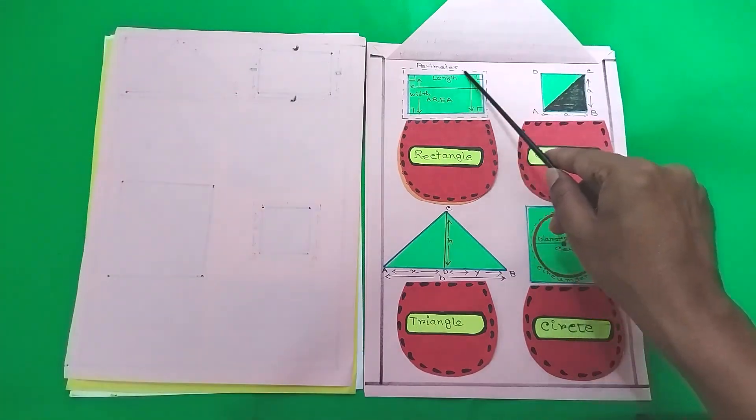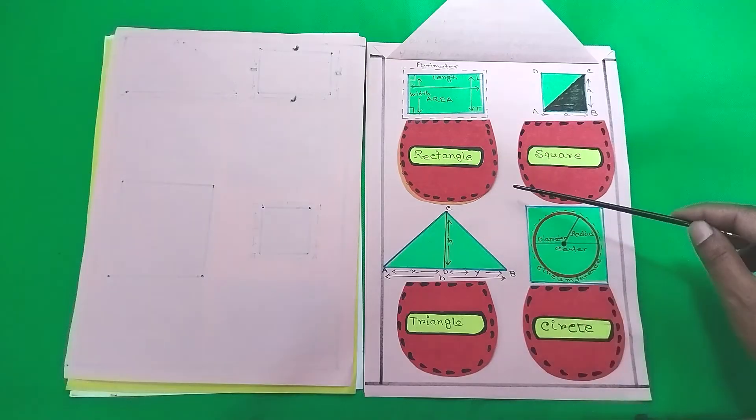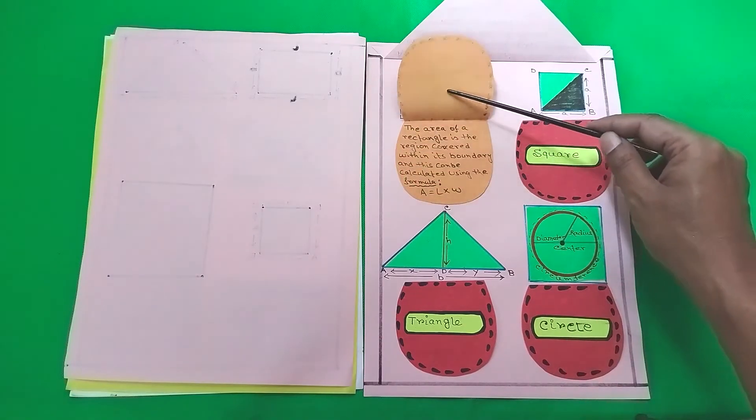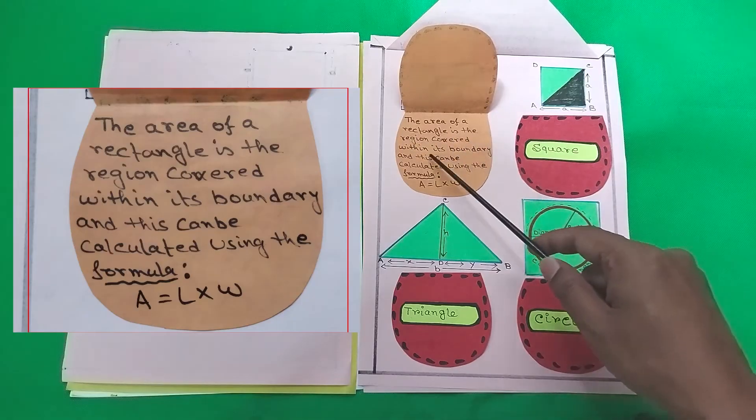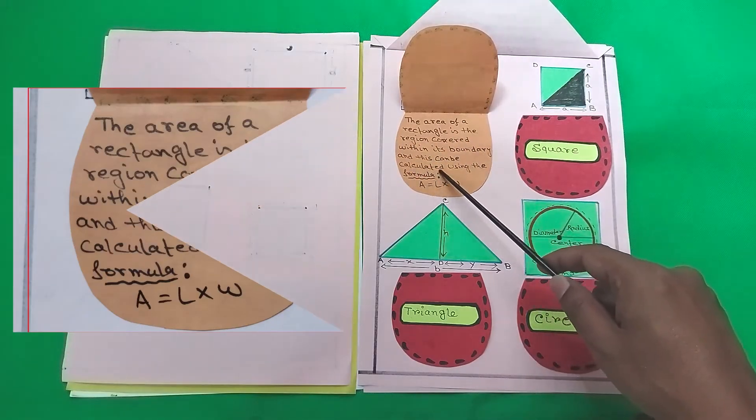So first we have the area of a rectangle. The area of a rectangle is a region covered within its boundary and this can be calculated using the formula A equals L times W.